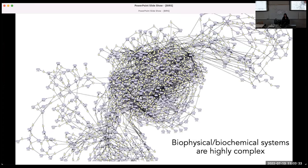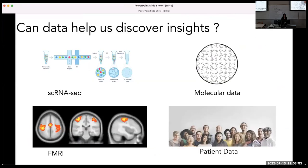One high-level motivation I keep in mind is that in science we have very highly complex entities — biophysical and biochemical entities — that are complex in the sense that they have a lot of interacting components. The question is, now that we have all this data, can we actually learn anything about this underlying entity?